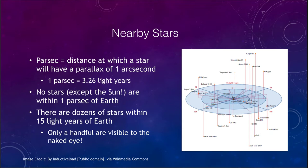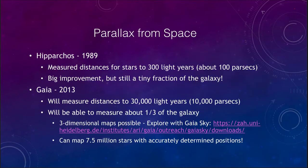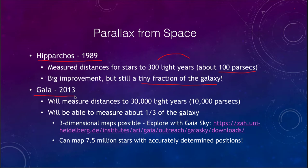To improve on this, we can make measurements from space. We've put satellites up in orbit — Hipparcos in 1989 was able to measure distances up to 300 light years, or 100 parsecs. A big improvement over what we could do from Earth, but still a tiny fraction of the galaxy. More recently, Gaia in 2013 is working on measuring distances to 10,000 parsecs, or 30,000 light years — still just a fraction of our galaxy, which is 100,000 light years across, getting stars out to about a third of our galaxy.